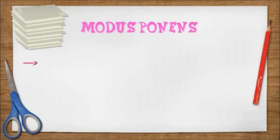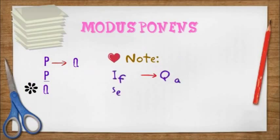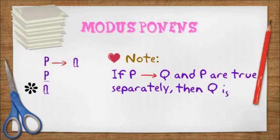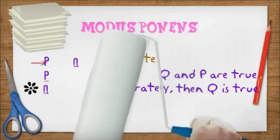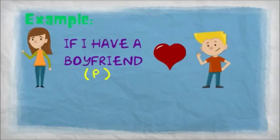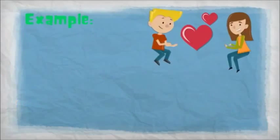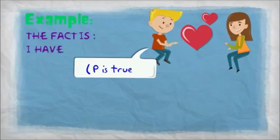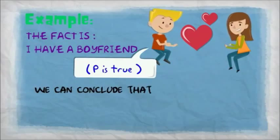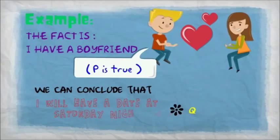The first is modus ponens. Let's check this example. If I have a boyfriend as P, then I will have a date on Saturday night as Q. The fact is I have a boyfriend, so P is true. We can conclude that I will have a date on Saturday night, so Q is true.